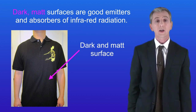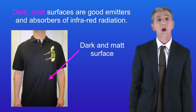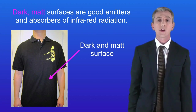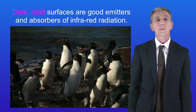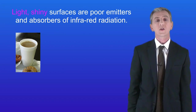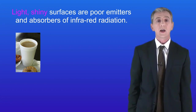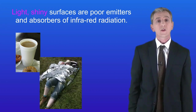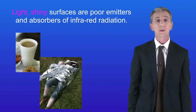Dark and matte surfaces are also really good absorbers of infrared radiation. So if you go out in the sun wearing a black shirt, you'll start to feel really hot as you absorb infrared radiation from the sun. You can see that here with these penguins. The penguins are pointing their backs at the sun and because their backs are black, they absorb more infrared radiation which keeps them warm. Light or shiny surfaces are not good at emitting infrared radiation. This coffee cup is white, so it emits less infrared, helping to keep the coffee hot. This person is keeping warm with a foil blanket because the shiny surface won't allow heat to escape from her body by infrared.